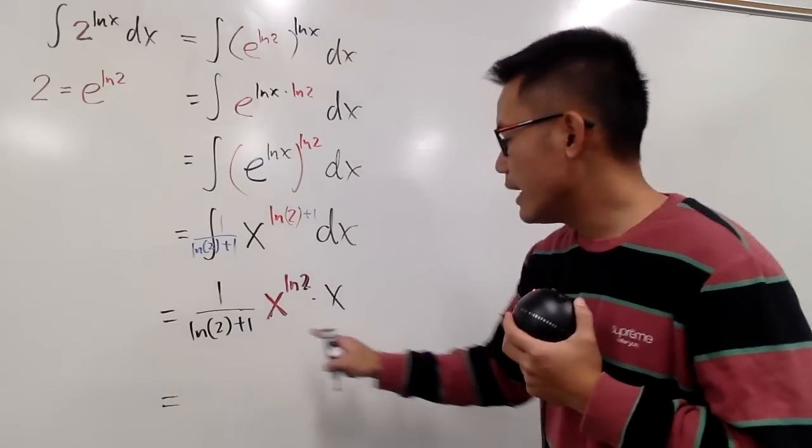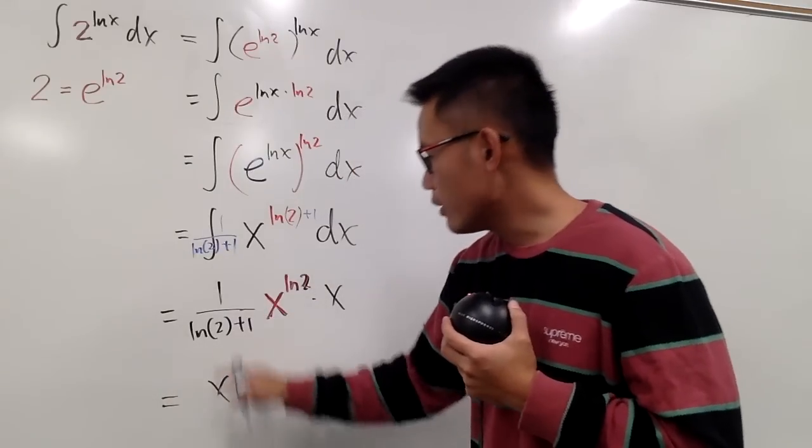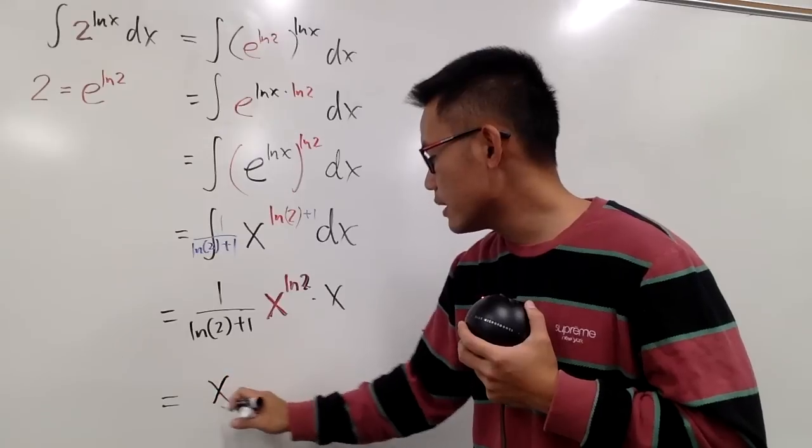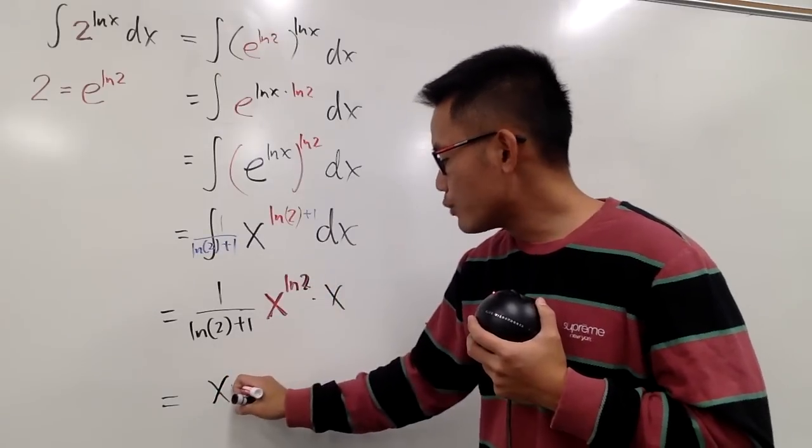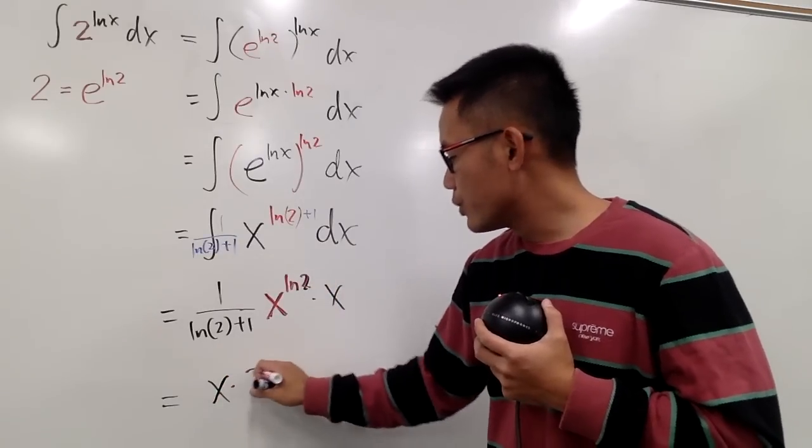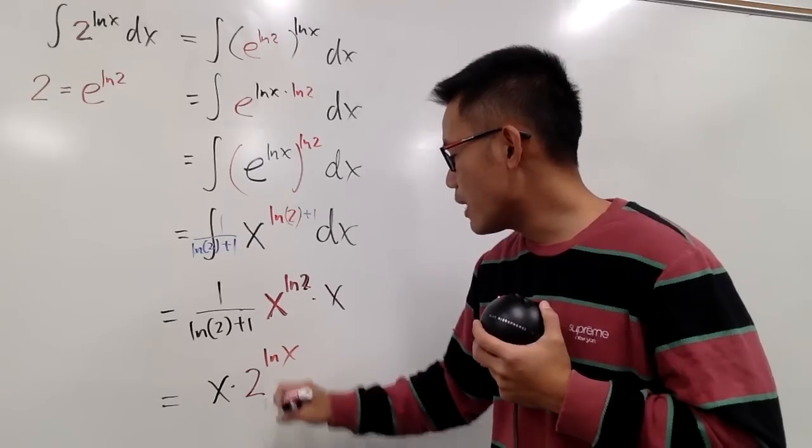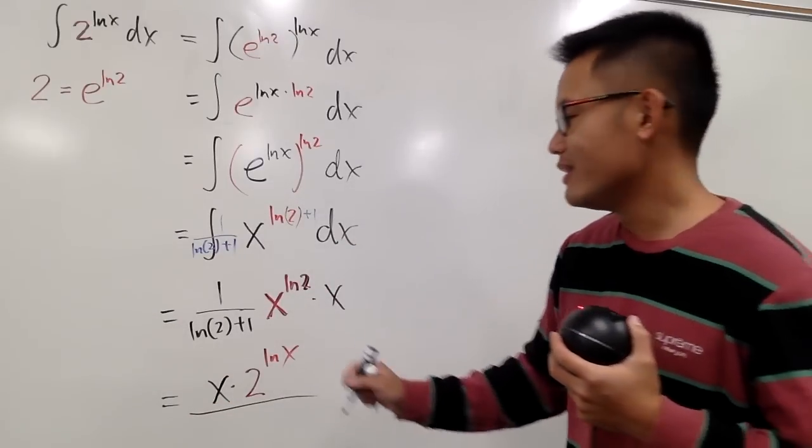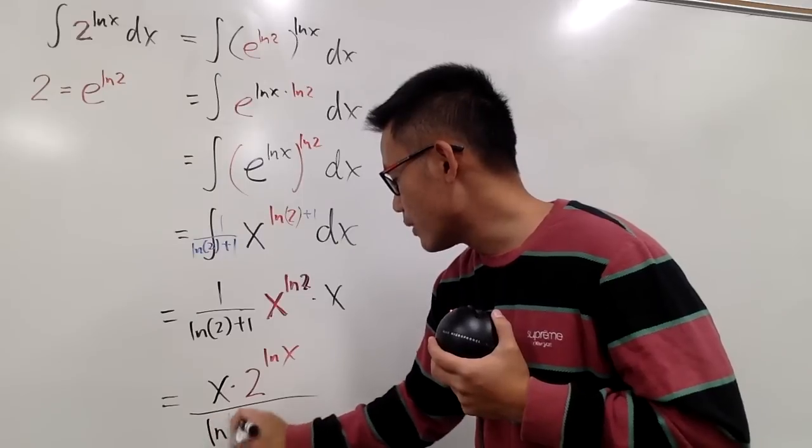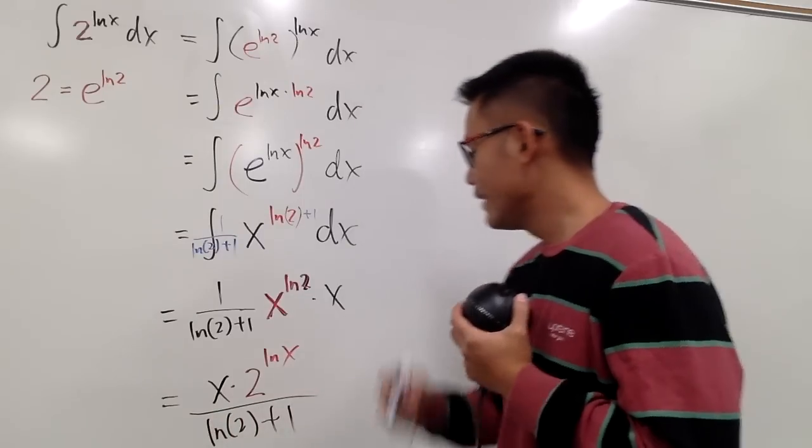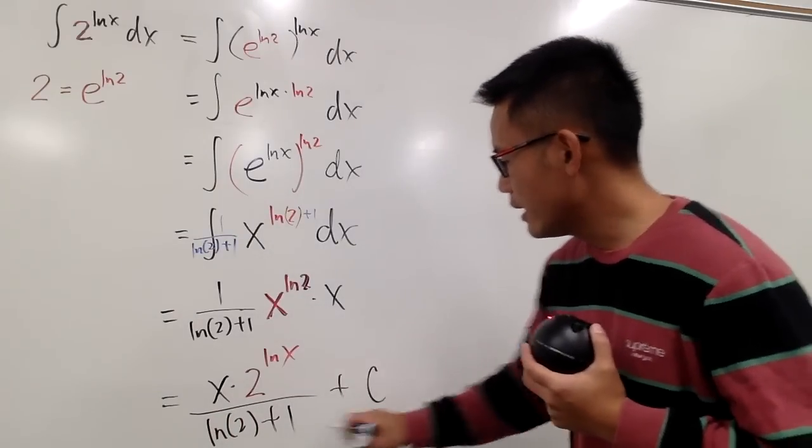So all in all, I'm going to put the x to the top right here. Of course, multiply by 1 doesn't really matter. This part, I will write it as multiplying by 2 to the ln x power, divided by this number for the denominator, which is ln 2 plus 1. And we are done. So put plus C, and this is it.